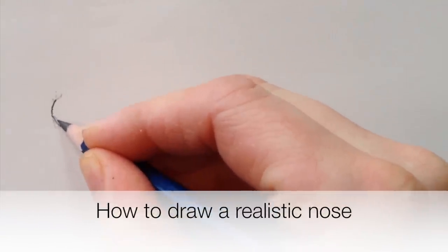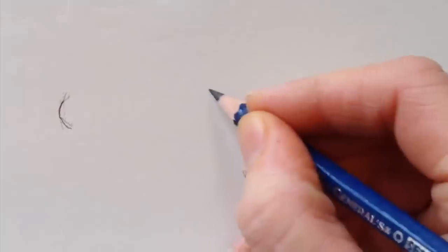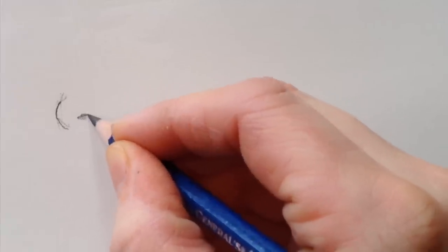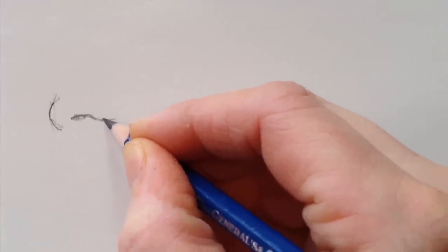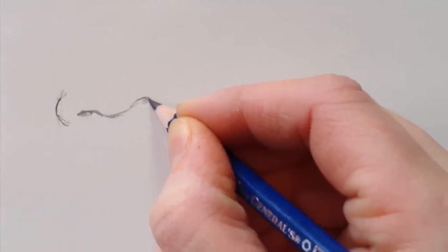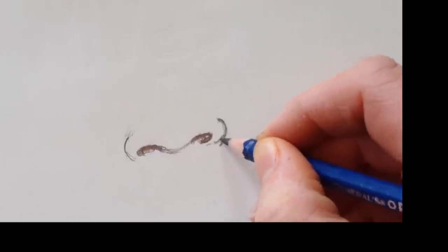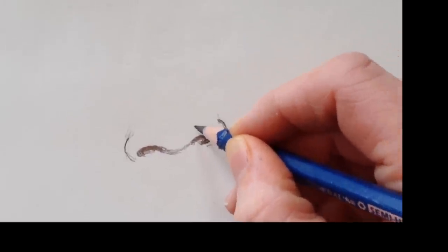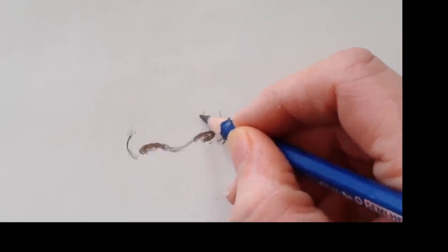To draw the nose, start by drawing a C for the side of the first nostril, then draw a bump, a dip, and another bump for your two nostrils. Add a backward C for the other side of the nostril, then draw a V over your bumps.